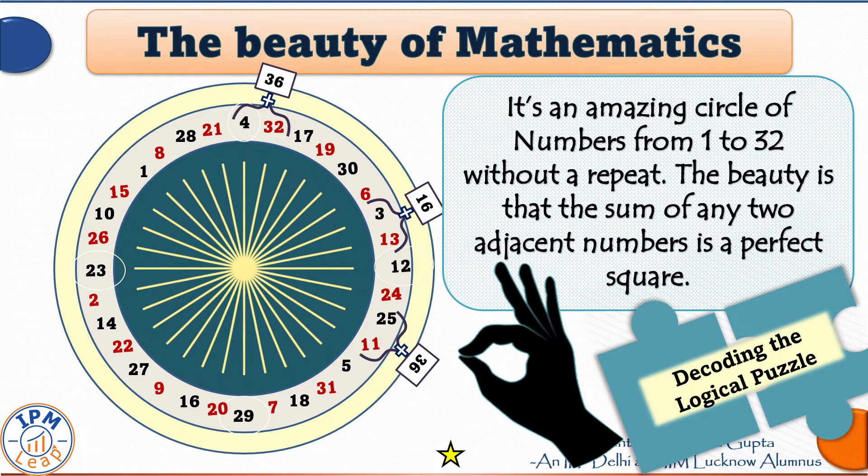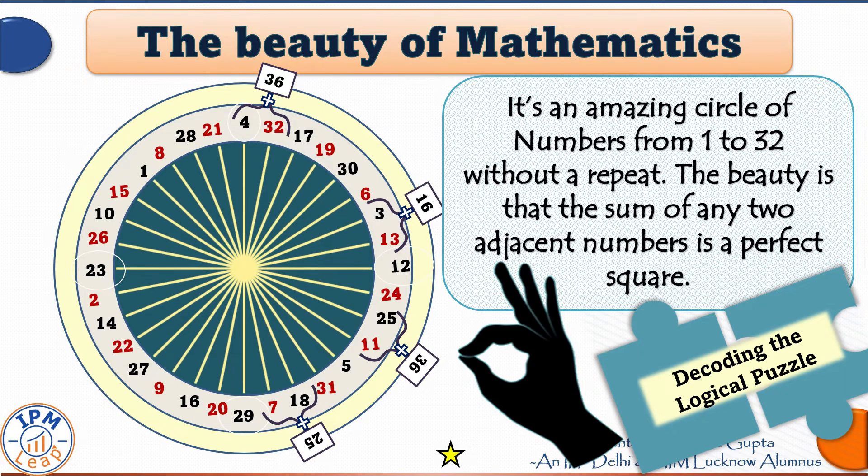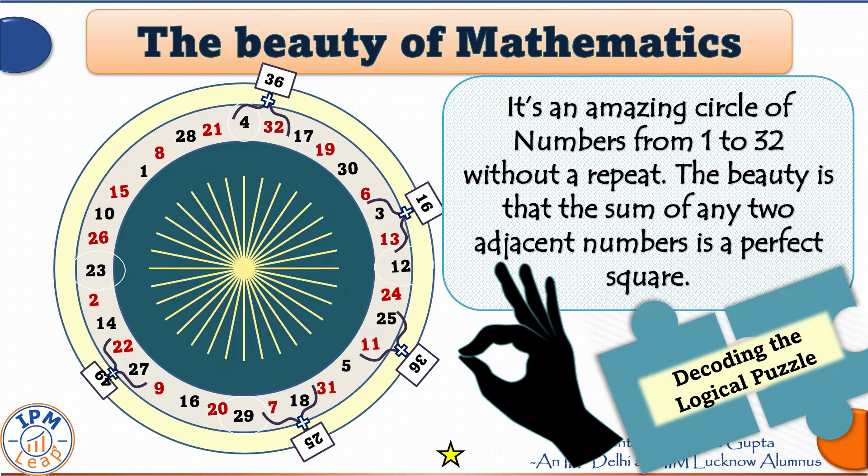If I add 18 and 7, I get 25 which is the square of 5. Adding 27 and 22, I get the number 49 which is the square of 7. Adding 10 and 15 gives me the square of 5 again. So essentially, for any two adjacent numbers that you pick, their sum will be a square and that's the beauty of this puzzle.